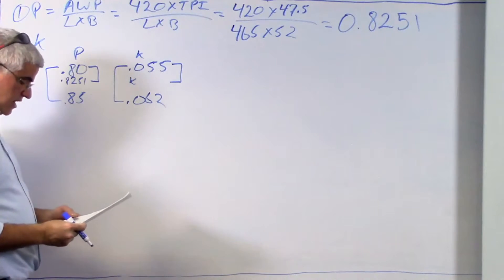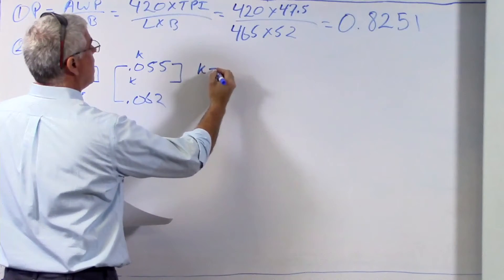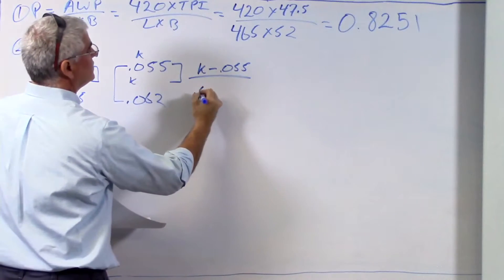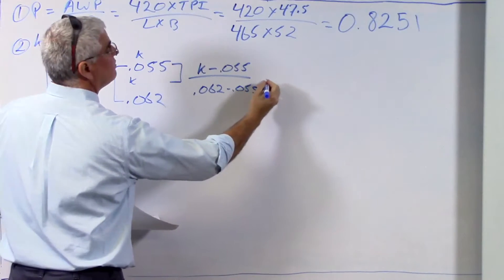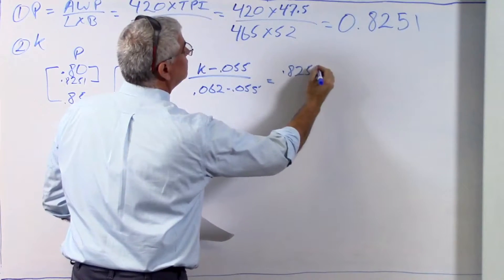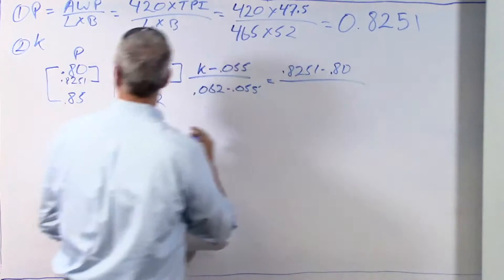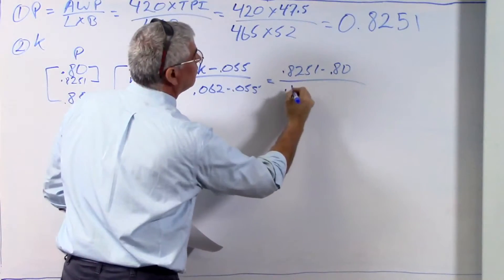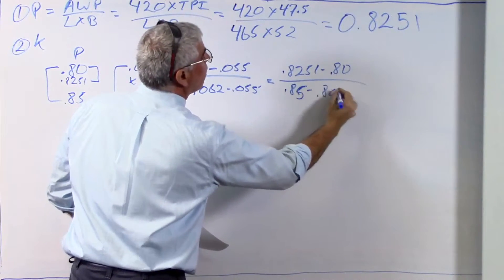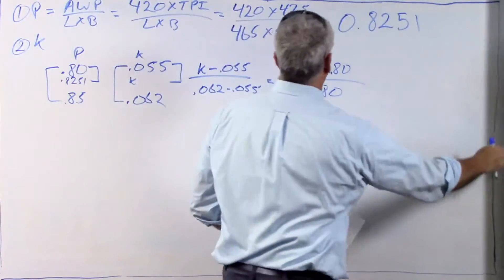So I'm going to set up my proportion now. And so k minus 0.055 is proportional to 0.062 minus 0.055, as 0.8251 minus 0.80. So now I can break this down a little bit.